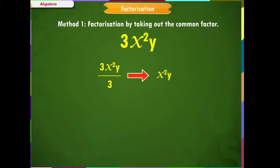If we divide this number by 3, we get x²y. Similarly, when we divide this number by x, we get 3xy, and by y, we get 3x². So, the factors of the expression 3x²y are 3, x, and y.